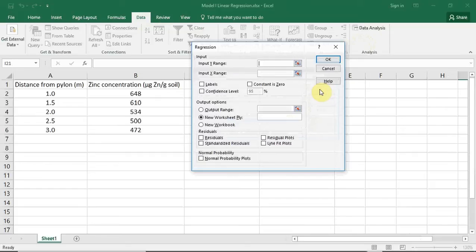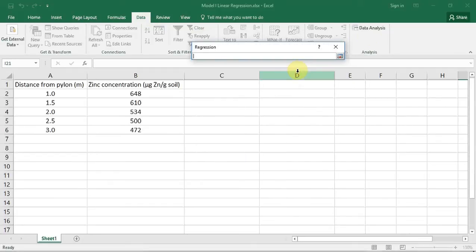The first thing we need to do is input the variables. I am going to start with the X variable, which is a variable that we had control of, and in this case is our distance from the pylon. You do that by pressing the little box with the red arrow, which brings up another window to enter the selection. I can do this simply by dragging and dropping the cursor over my data.